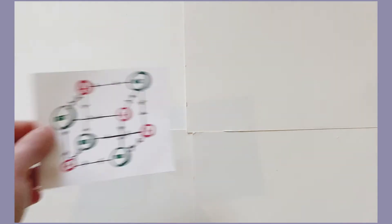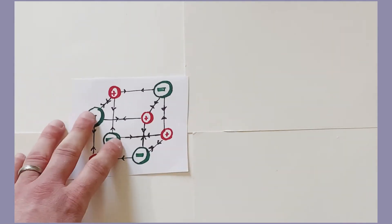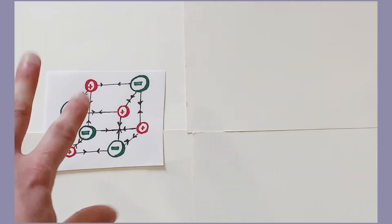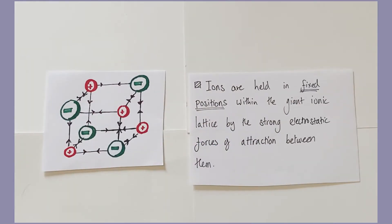But think about the structure itself. This is my small orientation again. There's no way the ions inside this structure, the solid, can actually move. So the ions are being held in fixed rigid positions within the giant ionic lattice by those strong electrostatic forces of attraction between the ions themselves. They're not going to be moving anywhere.